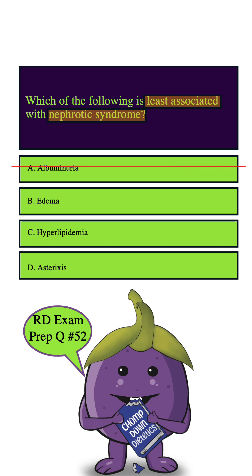How about B? Edema is swelling due to fluid retention, and it's another common symptom associated with nephrotic syndrome. The loss of protein in the urine leads to a drop in oncotic pressure, which allows fluid to leak from the blood vessels into the tissues, causing edema. We can safely eliminate this answer choice.